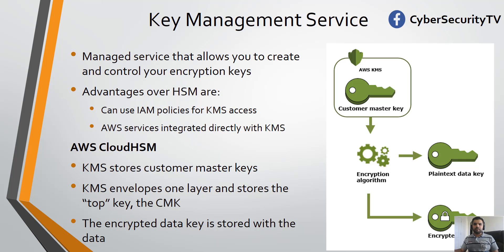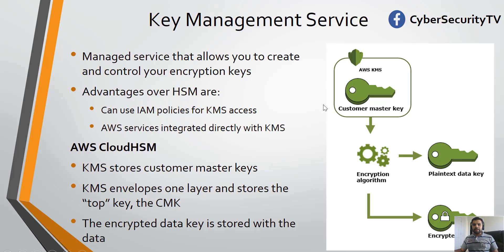Let me go over this diagram to explain how it really works. For example, let's say you have plain text data that you want to encrypt and store in S3 or EFS. You apply an encryption algorithm and get encrypted ciphertext which you store in S3 or EFS. When you store this data, along with it you also store the encrypted data key — which key you had used to encrypt this data.